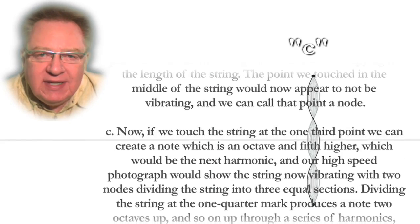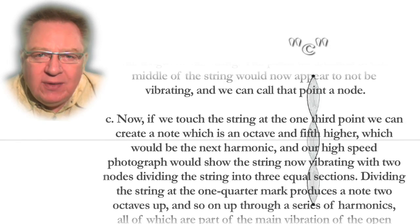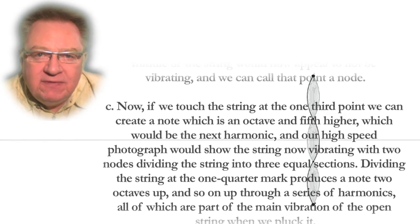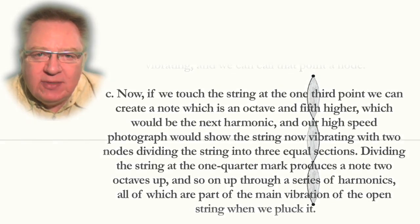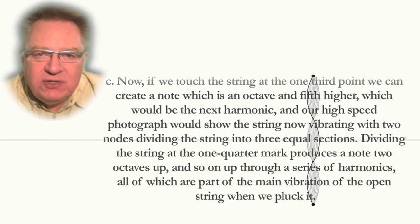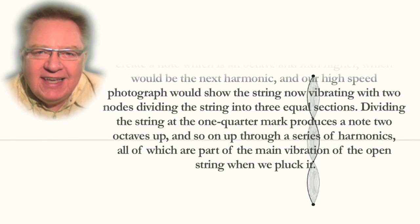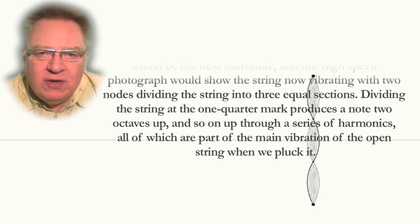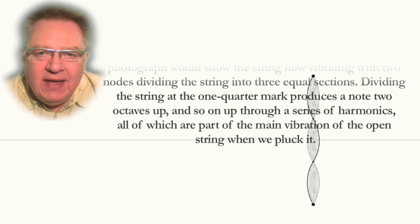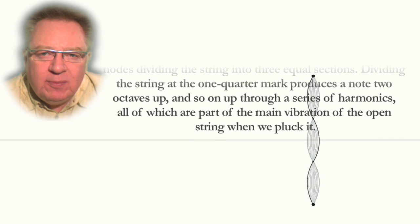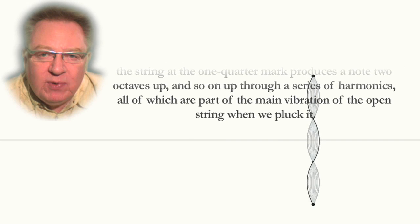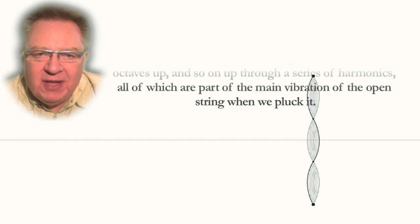Diagram C. Now, if we touch the string at the one-third point, we can create a note which is an octave and fifth higher, which would be the next harmonic. And our high-speed photograph would show the string now vibrating with two nodes, dividing the string into three equal sections. Dividing the string at the one-quarter mark produces a note two octaves up, and so on, up through a series of harmonics, all of which are part of the main vibration of the open string when we pluck it.